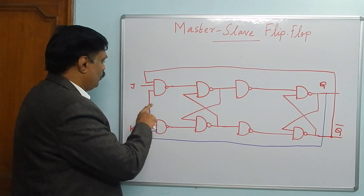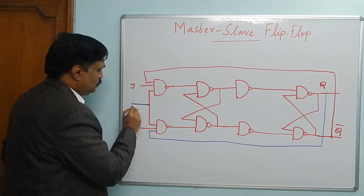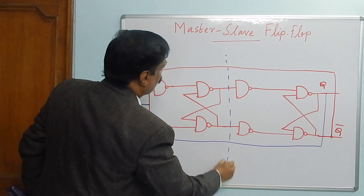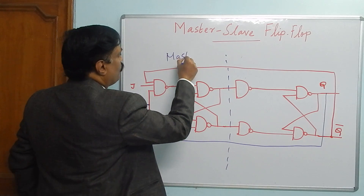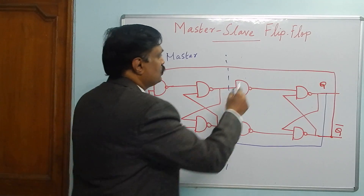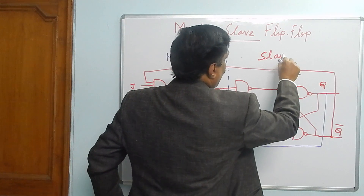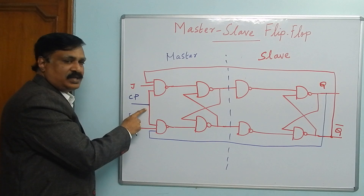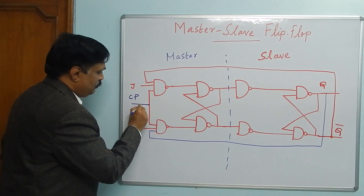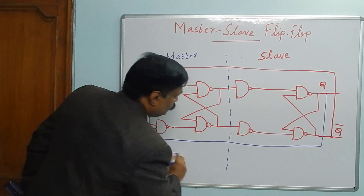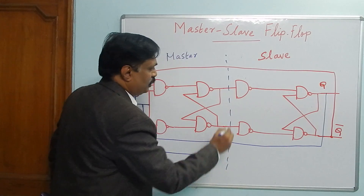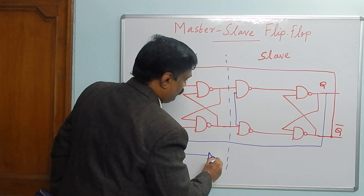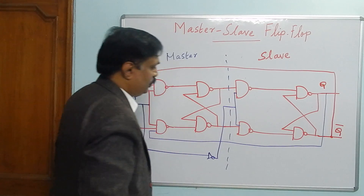Now one thing is missing - the clock pulse. This clock pulse is for the first flip-flop, which is the master. For the master it is positive triggering. For the slave, you have to connect through a NOT gate. So the slave receives the inverted clock pulse through a NOT gate.